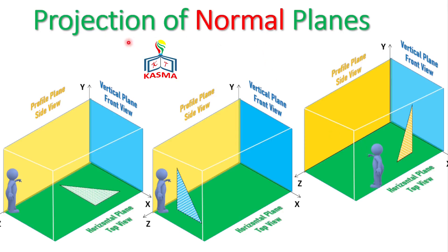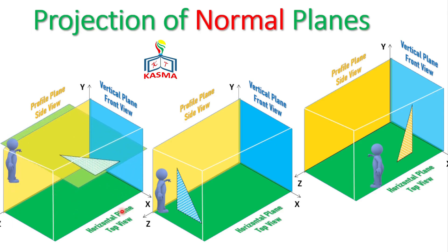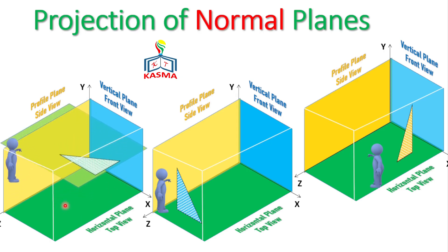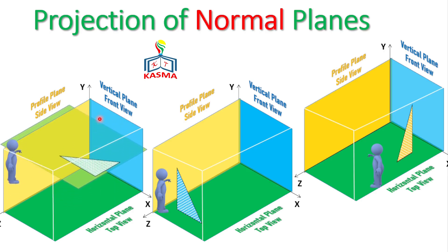In this video we'll see projections of normal planes — how we could project a normal plane on different views: the front view, the top view, and the side view. Before going to the projection part, let me show you something related to what a normal plane really is. A normal plane is a plane which is parallel to one of the principal planes and perpendicular to the other two principal planes.